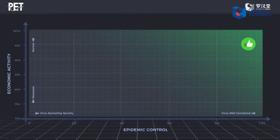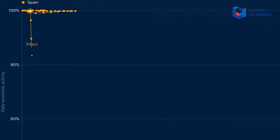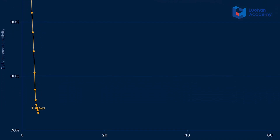The upper right-hand corner of the graph is the ideal state for any country battling the pandemic. Let's look at an example: upon detection of its first case, Spain spent one month in the preparation phase before moving into the response phase. In the preparation phase, its economic activity dropped more than 27 percent. It stayed at this low level for sixteen days, which is the trough phase.